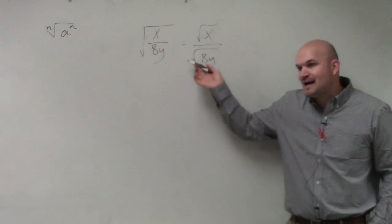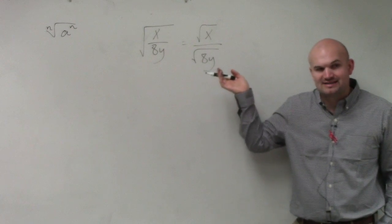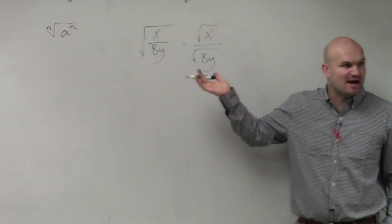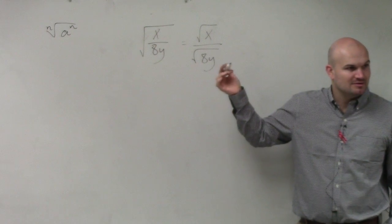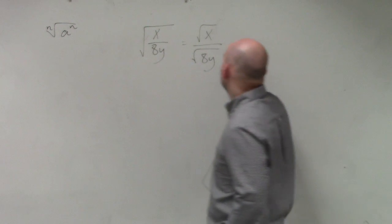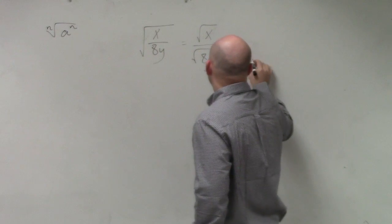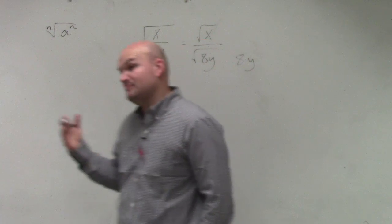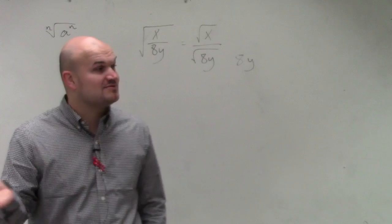So what should I multiply 8y so therefore I have it as 8y squared? How many 8ys do I need to multiply by? Just one. So if I multiply this by 8y, therefore that would give me 8 times 8 is 8 squared, y times y is y squared.